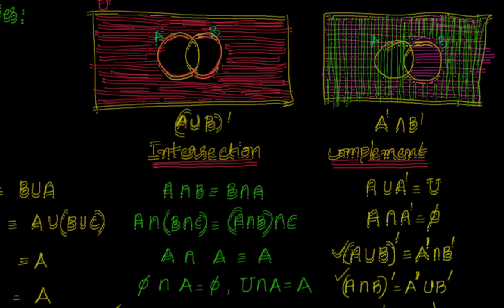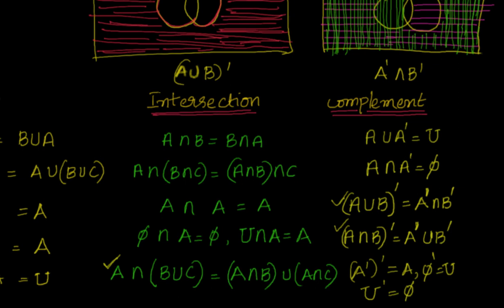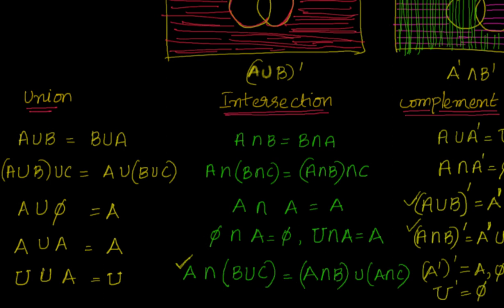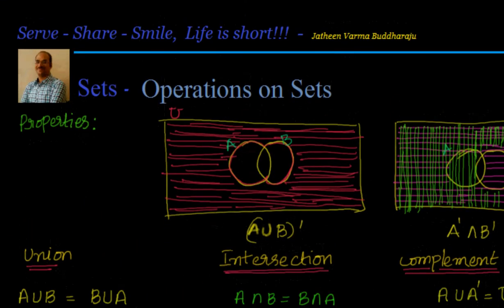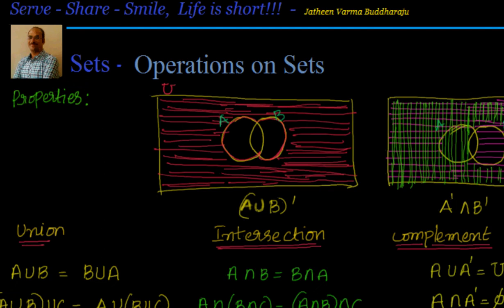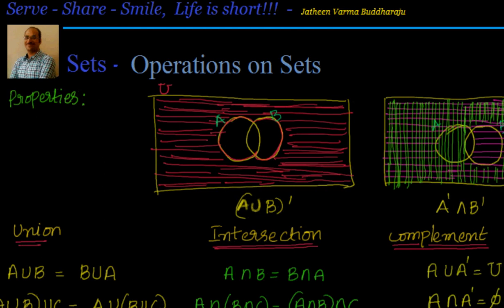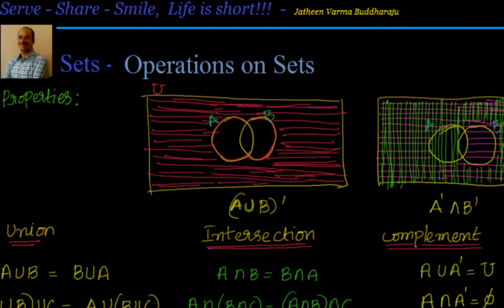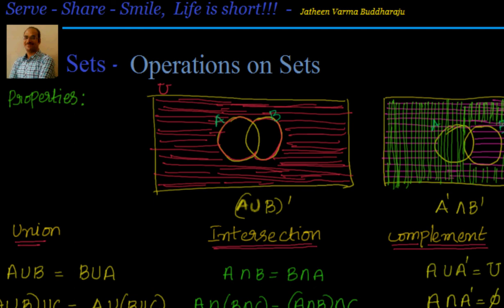So these are some properties which I listed so that you can have a quick reference. In the next session we will go through some practical problems and examples. For that we will cover a couple of small formulas like N(A∪B) = N(A) + N(B) − N(A∩B), and another one for N(A∪B∪C). With that we can solve some practical examples. See you in the next video. Thanks for visiting, bye for now.